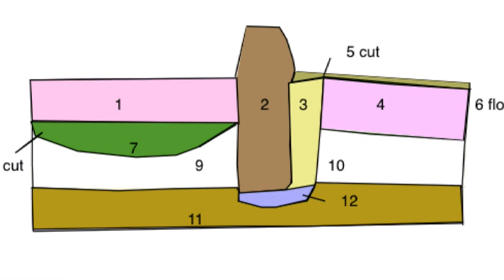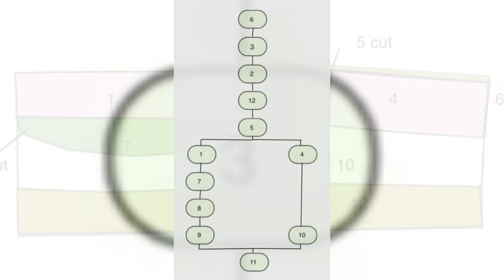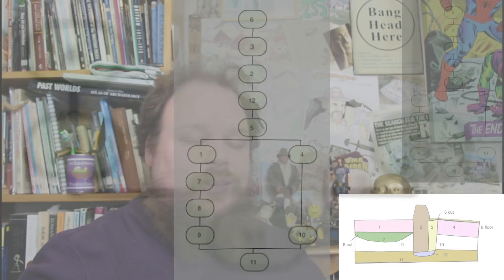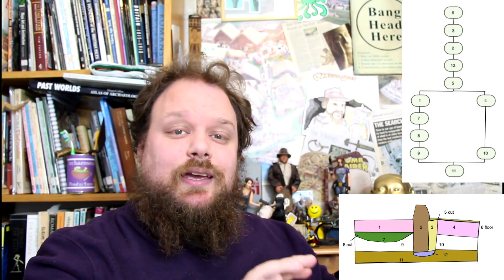Hello and welcome back to another Aspects of Archaeology. Today I'm going to be covering a topic which has been hinted at in previous videos but never explicitly talked about. We've mentioned something called the Harris Matrix — a way of recording features such as cuts, fills, and contexts, putting them into a flowchart relationship so that during and after excavation you can understand how different features on a site relate to each other.